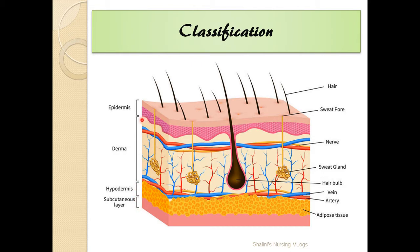In first degree burn, it is the epidermis that is affected. In second degree burn, it is the dermis that is affected. The dermis has two layers: the upper one-third is the papillary dermis, and the lower two-thirds is the reticular dermis. Second degree superficial burns affects mostly the papillary dermis, while second degree deep burns means the whole dermis along with the epidermis is affected.